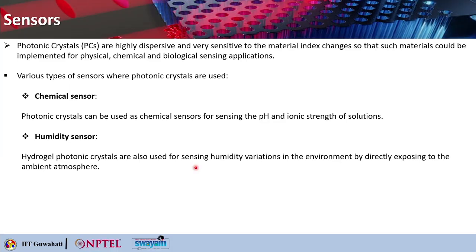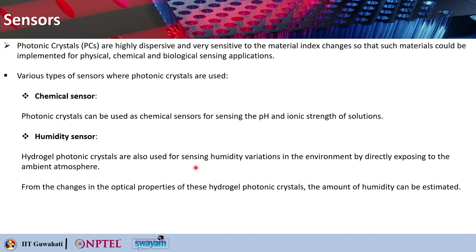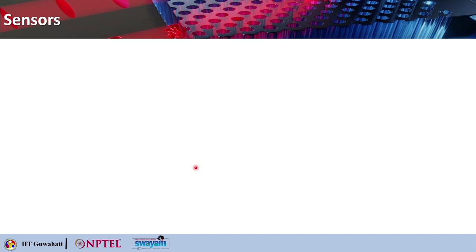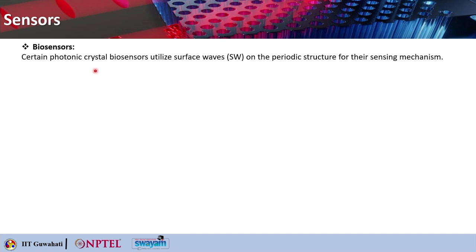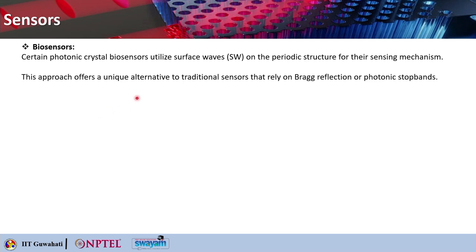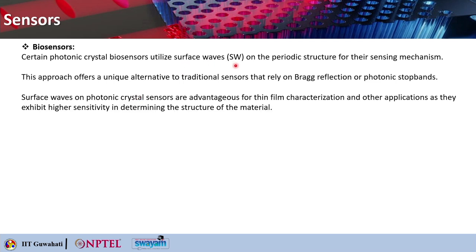Hydrogel photonic crystals are valuable for applications in sensing, drug delivery, and tissue engineering. The combination of hydrogels with photonic crystals creates materials that respond to environmental changes by altering their optical properties such as reflectance and transmission, offering unique functionalities. From changes in optical properties of hydrogel photonic crystals, the amount of humidity can be estimated. Certain photonic crystal biosensors utilize surface waves on the periodic structure for sensing, offering an alternative to traditional sensors relying on Bragg reflection or photonic stop bands. Surface waves on photonic crystal sensors are advantageous for thin film characterization, exhibiting higher sensitivity.